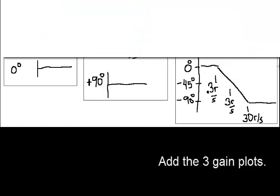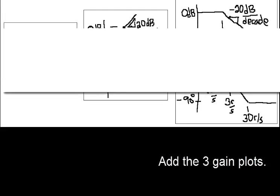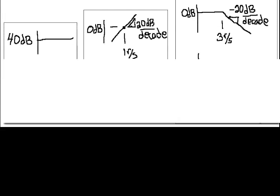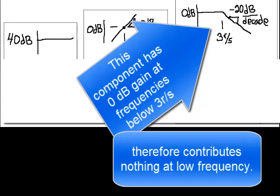Add the three gain plots. This component has 0 dB gain at frequencies below 3 radians per second, therefore contributes nothing at low frequencies.